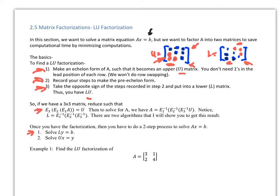For a 3x3 matrix, we can take an elementary matrix E1 multiplied by A to eliminate a value and turn it into a zero. E2 eliminates another entry, and E3 reduces another to zero. With all those matrices multiplied by A, to solve for A we take the inverses in reverse order — that's one of our key theorems — and this matrix becomes L.